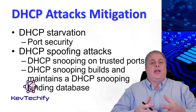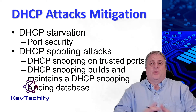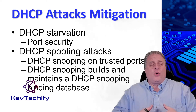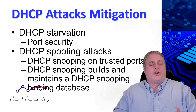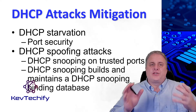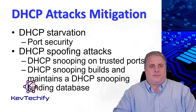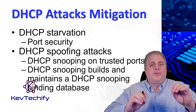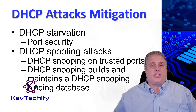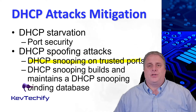It's easy to mitigate DHCP starvation attacks by using port security — you limit the number of MAC addresses on a port so it can only request so many MAC addresses. However, mitigating a DHCP spoofing attack requires more protection. DHCP spoofing attacks can be mitigated by using DHCP snooping on trusted ports.